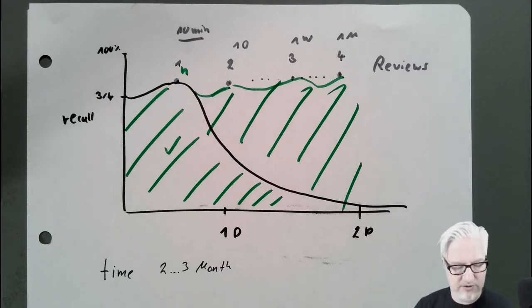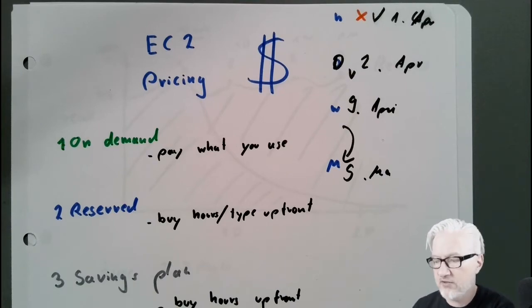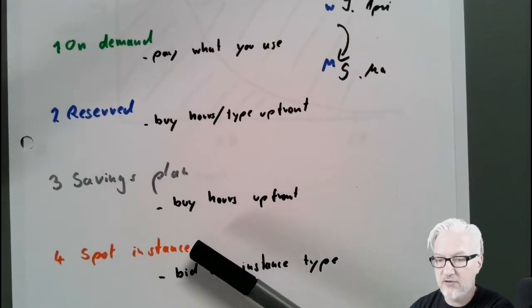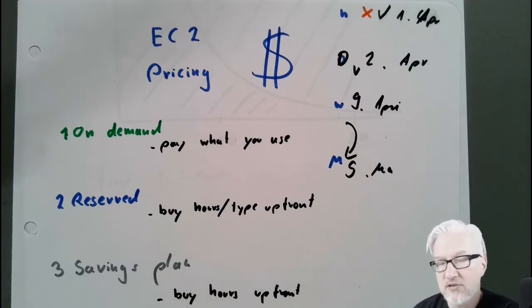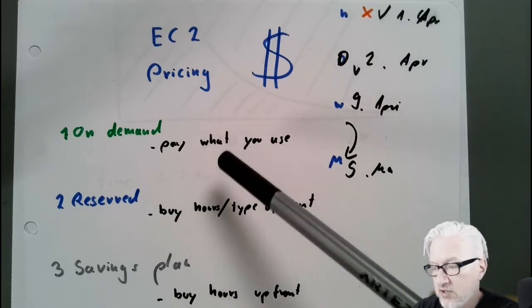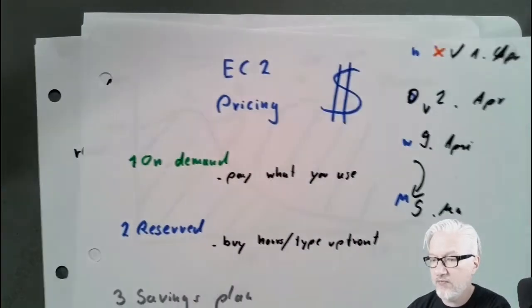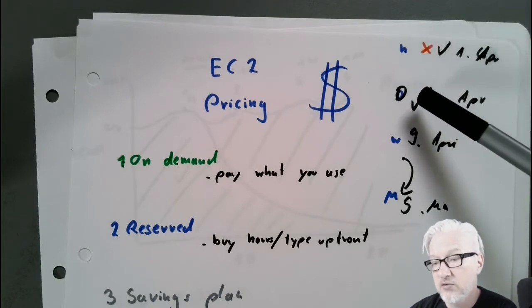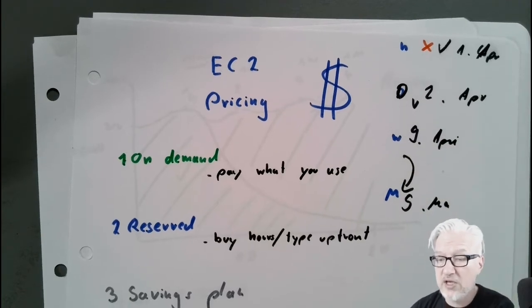In the last episode, I had the example of EC2 pricing and making a list — on demand, reserved, savings plan, and spot instances. The idea was that you write all the things down, try to memorize it while watching a video or reading white papers, then put the paper away. Use a blank paper and recreate it. If you succeed, you put it to the next day, repeat it again; if it's okay after a day, you repeat after a week, and so on.